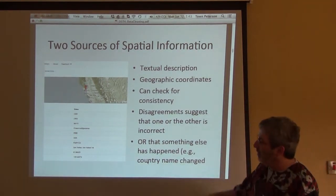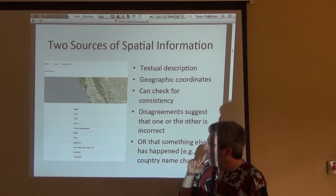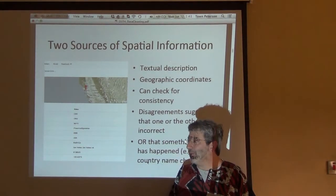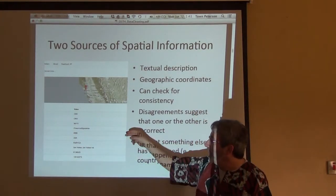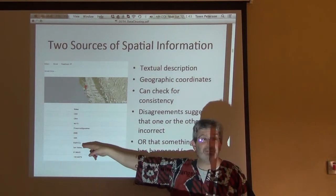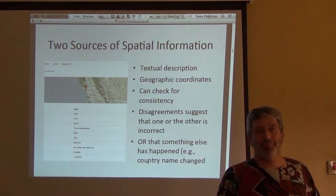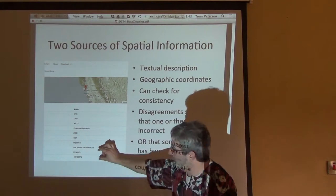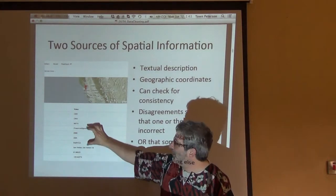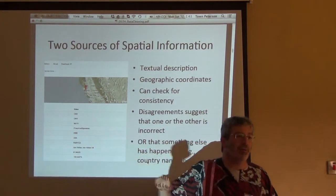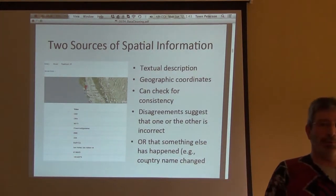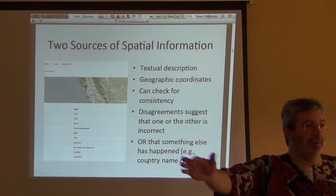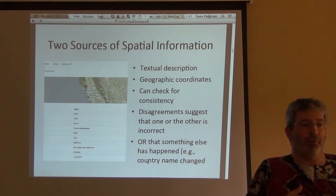We can very easily plot those coordinates and see whether they fall in the U.S. If they fall in Zimbabwe, we have a problem. We can see whether they fall in California, and whether they fall in Marin County. That's essentially taking one part of the data record — the coordinates — and checking them against another part of the data record, which is the textual description of the locality. And that's a very powerful thing, and oftentimes we can do it in an automated fashion for thousands of specimens.